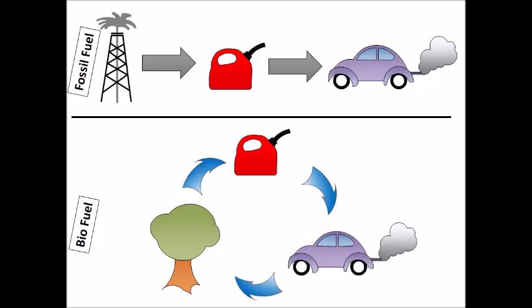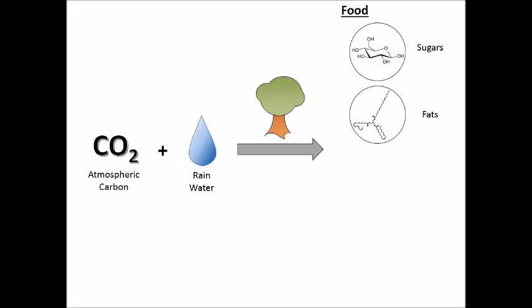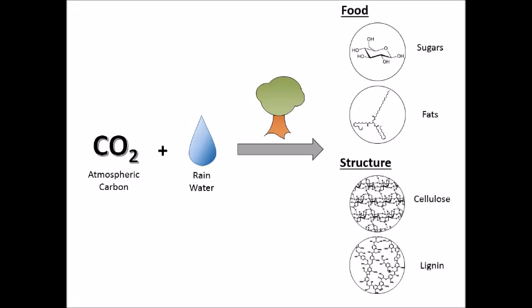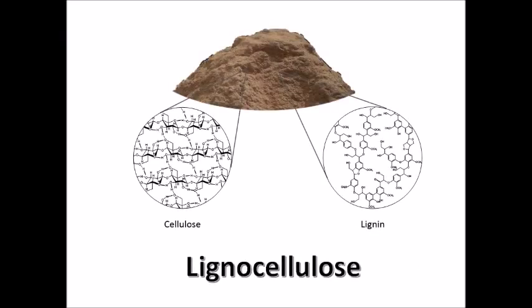This works because photosynthesis is the process of transforming atmospheric carbon, or CO2, into plant materials. These plant materials include foods such as sugars or fats and structural materials such as cellulose and lignin. Wood is actually a mixture of these two structural compounds called lignocellulose.